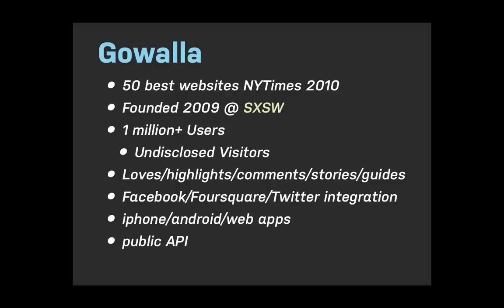Gowalla was named one of the 50 Best Websites by the New York Times in 2010. It was founded in 2009 and launched at South by Southwest. We have about a million-plus users and many more visitors. On Gowalla you can love things, highlight things, comment, create stories, create guides, and we integrate with Facebook, Foursquare, and Twitter. We also have an iPhone app, an Android app, and a web app including a public API.